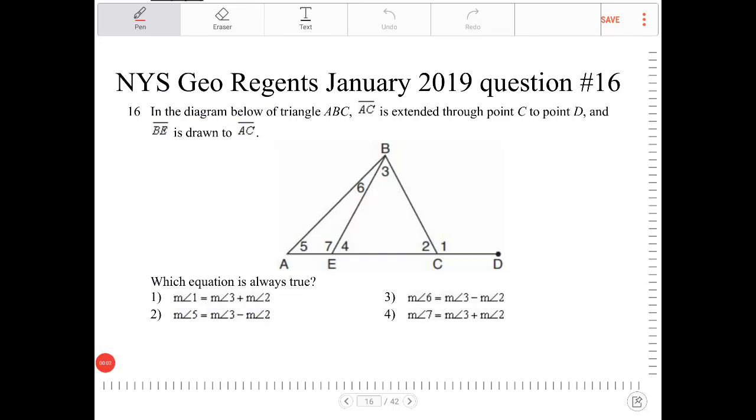In the diagram below of triangle ABC, AC is extended through point C to point D, and BE is drawn to AC. So that description there, it's already drawn on the diagram.